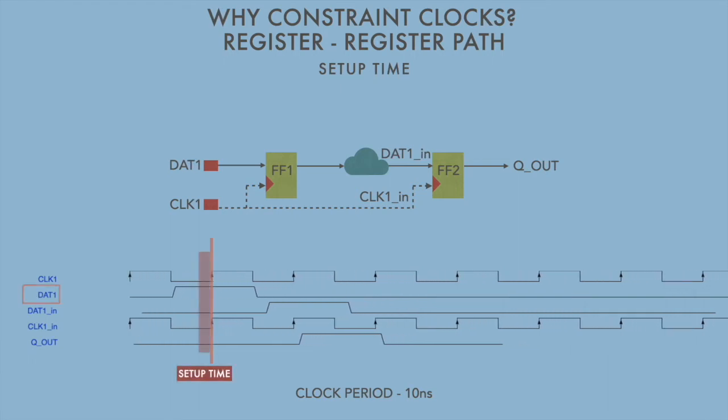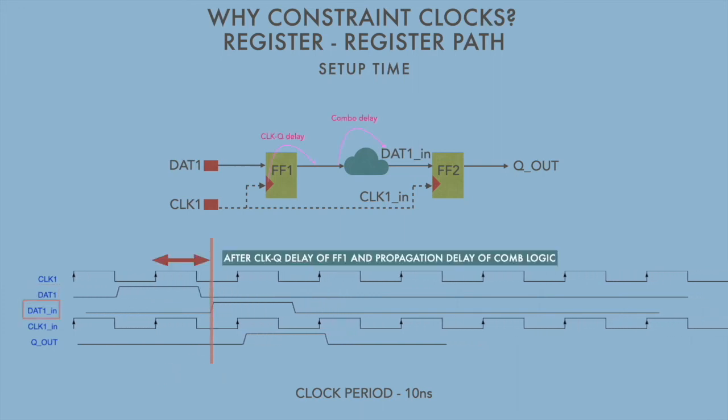You can see that data is asserted before the setup time of FF1 and it is stable and hence it is reliably captured by FF1. Now after the clock to queue delay of FF1 and the combinational delay between FF1 and FF2, the output of FF1 reaches the input of FF2, that is dat1_in.